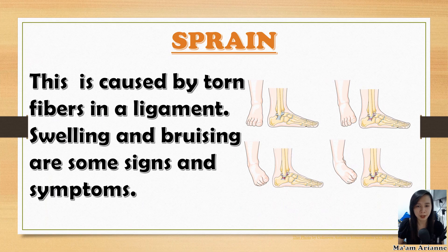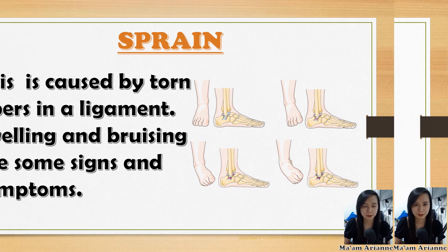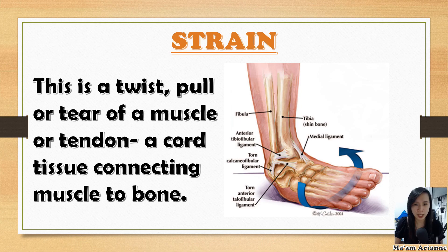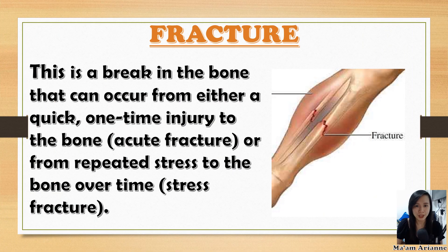Here are some common injuries that a dancer might experience during dancing or training. First is sprain, caused by torn fibers in a ligament — swelling and bruising are some signs and symptoms. Second is strain, a twist, pull, or tear of a muscle or tendon, which is a cord tissue connecting muscle to a bone. Third is fracture, a break in the bone that can occur from either a quick one-time injury to the bone (acute fracture) or from repeated stress to the bone over time (stress fracture).